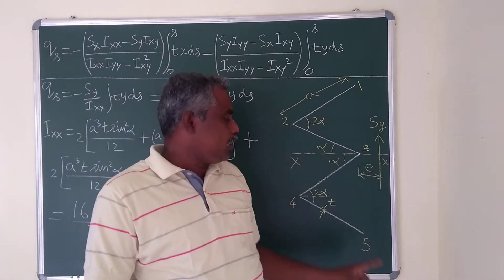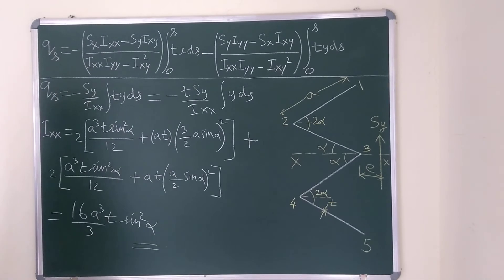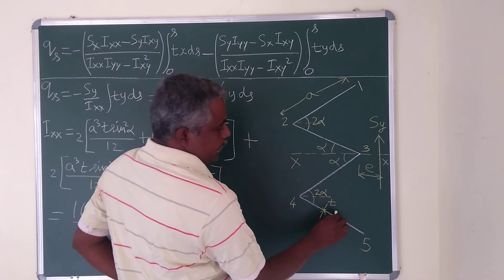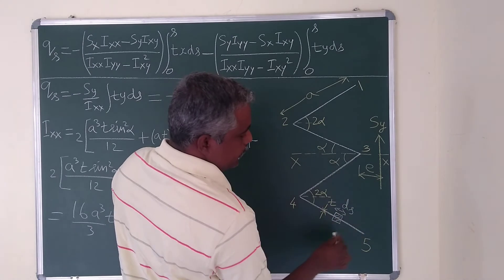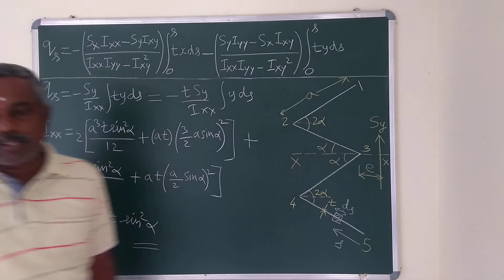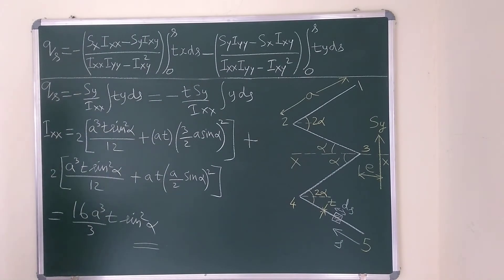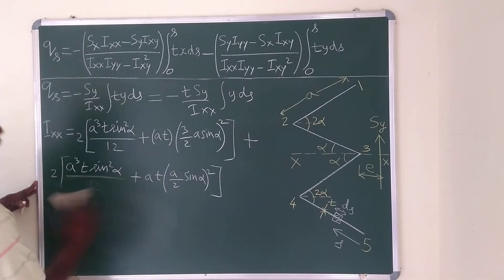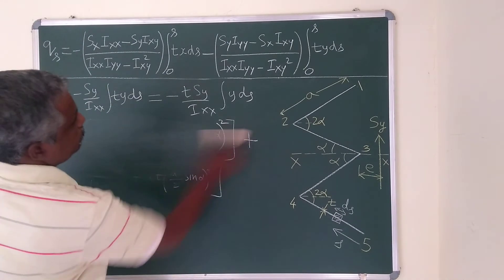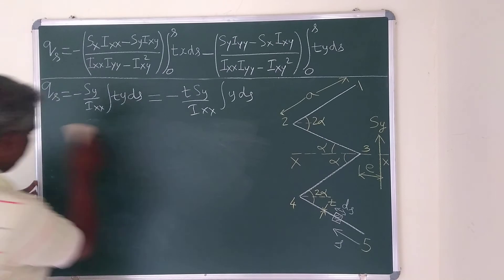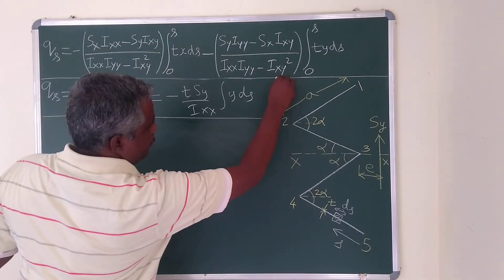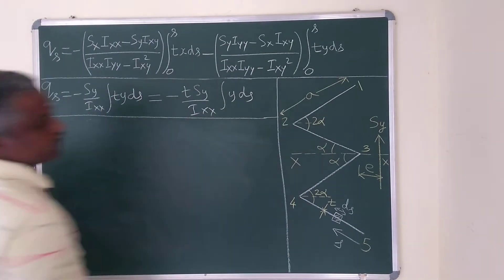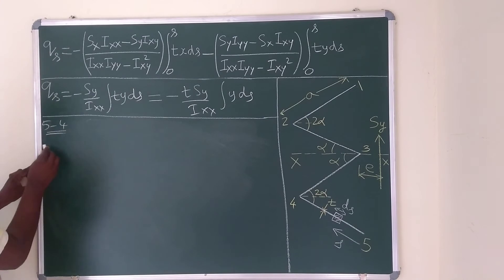Thickness T is constant throughout the section. At an open end, the shear flow is zero, so we start from open end 5. Consider a small segment ds at a distance s from open end 5. We are trying to find the shear flow expression Q(5→4).